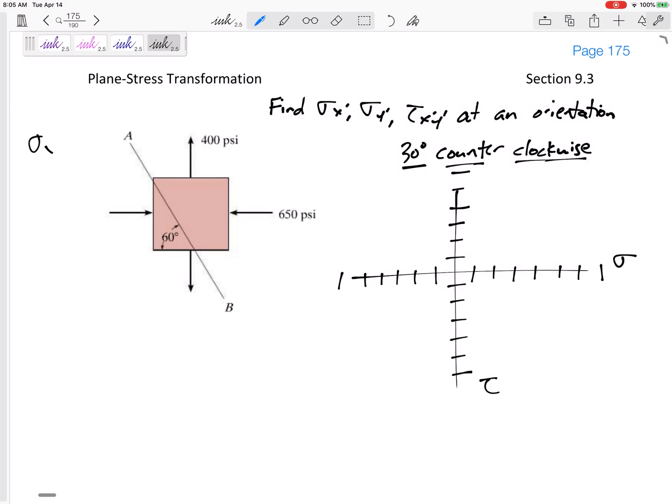All right, so what are we given? Sigma X negative 650, Sigma Y positive 400, and tau is 0. Okay, let's see how this maps out.